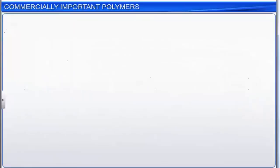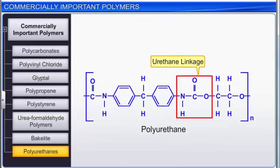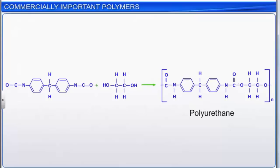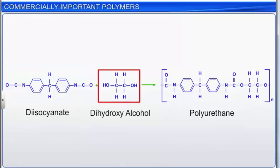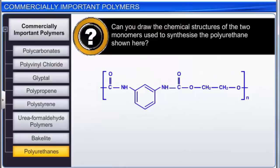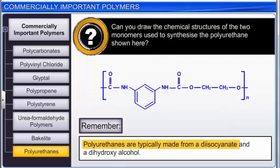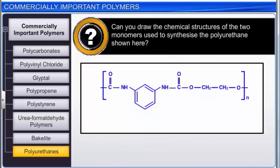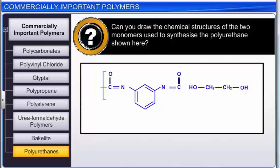Polyurethanes are a class of polymers with a urethane linkage, generally made from two monomers: a diisocyanate and a dihydroxy alcohol. Working backwards from the polymer structure, we can draw the two monomer structures. Polyurethanes are very versatile polymers whose many forms include foams, elastomers, and fibers.